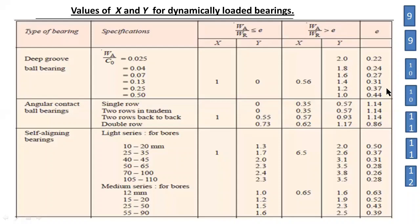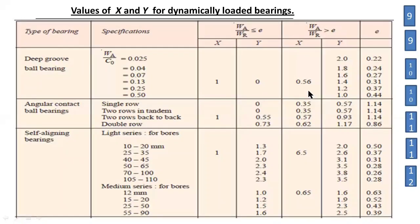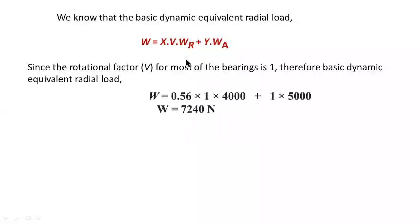Since wa/wr = 1.25 is greater than e = 0.44, we use x = 0.56 and y = 1.0 from the data book. Substituting x = 0.56, v = 1, wr = 4000, y = 1.0, and wa = 5000 into the equivalent dynamic load formula gives W = 7240 N.